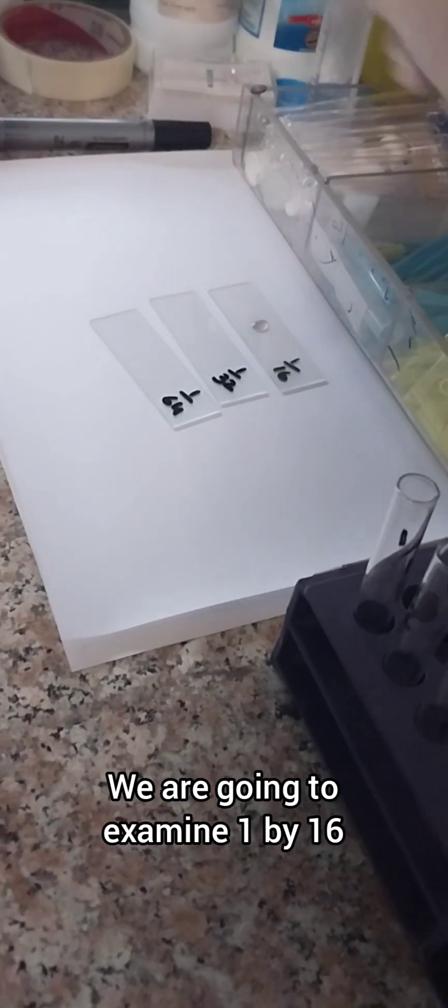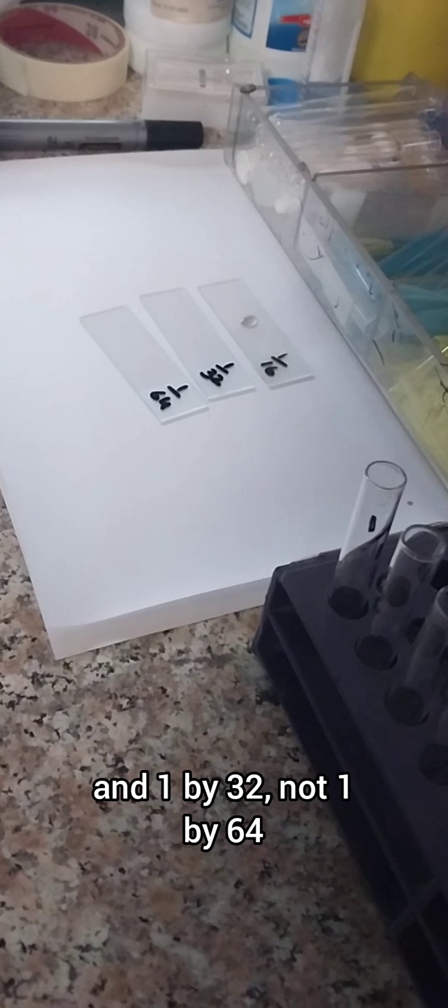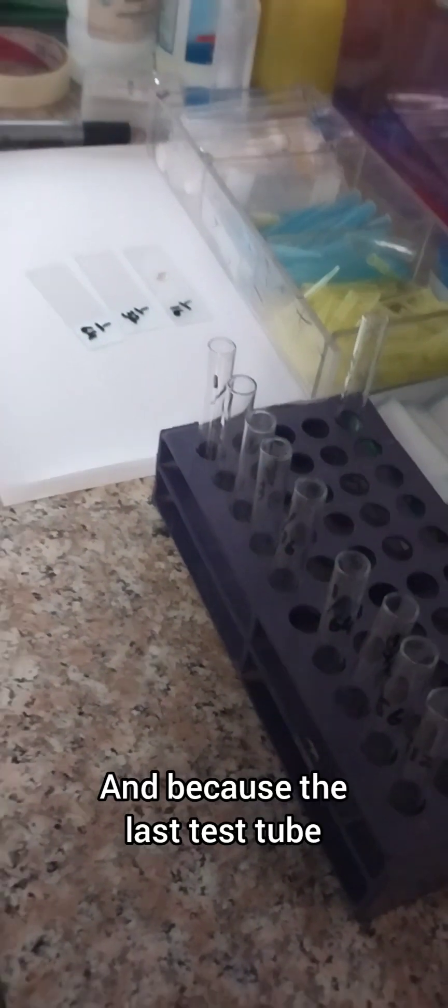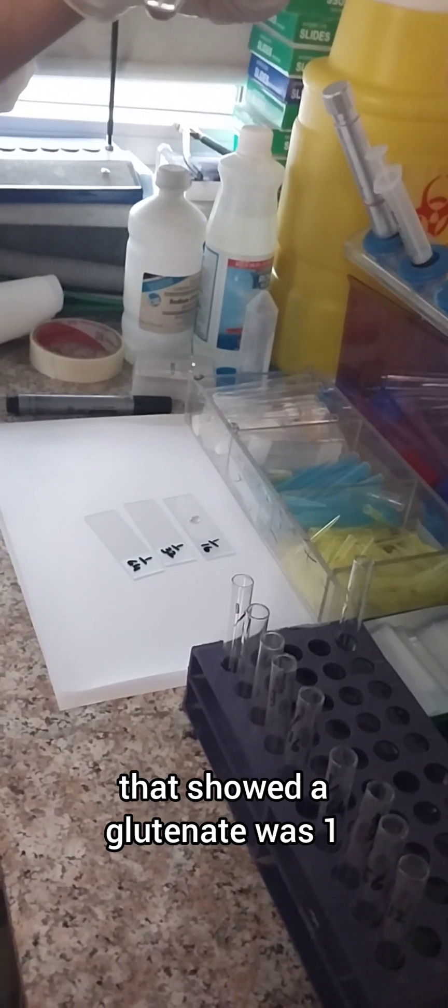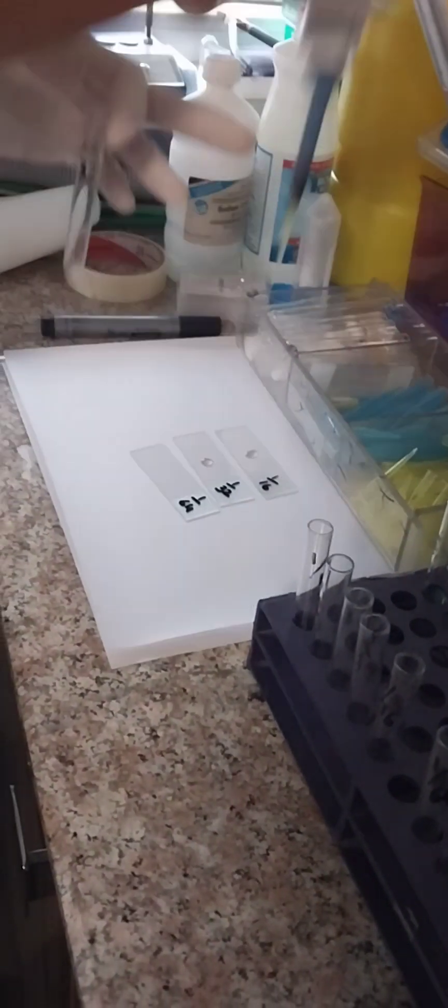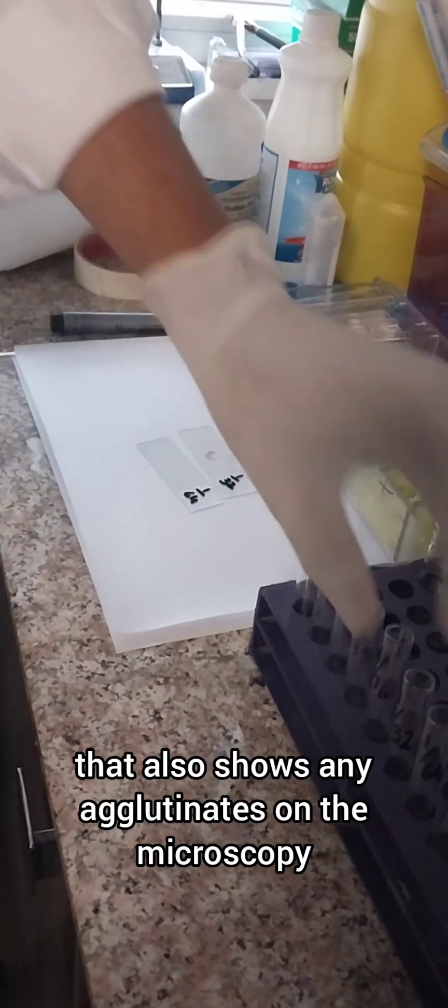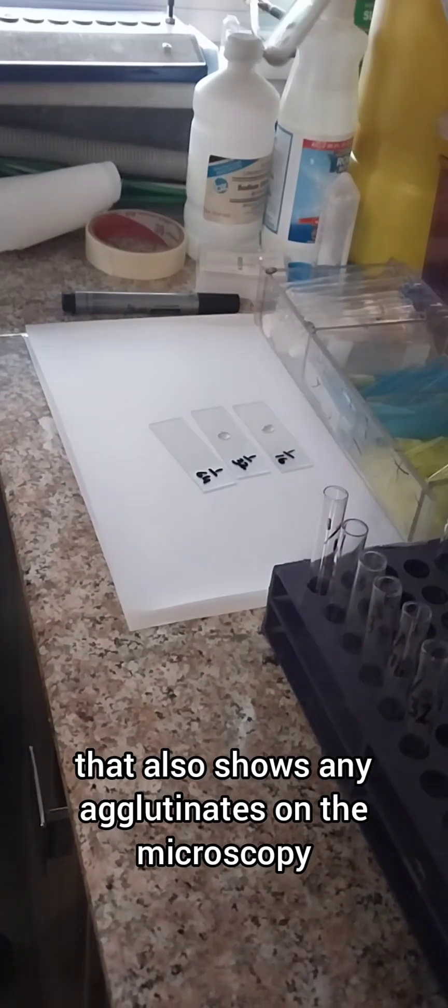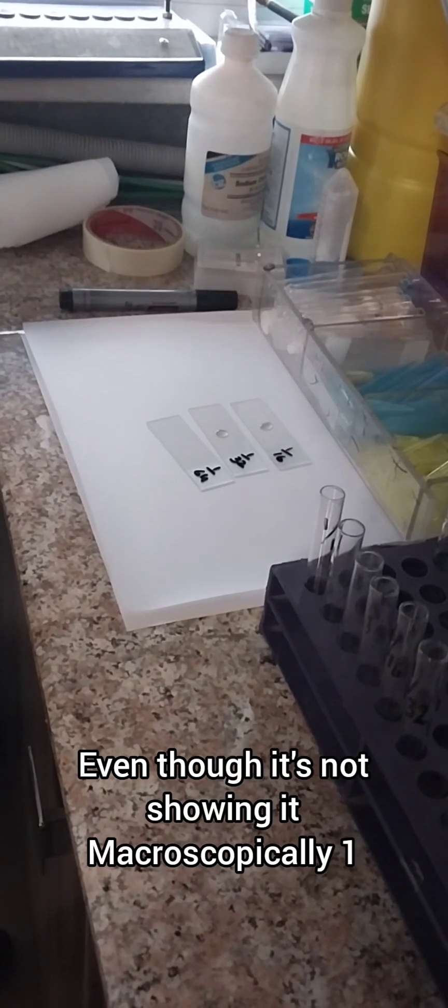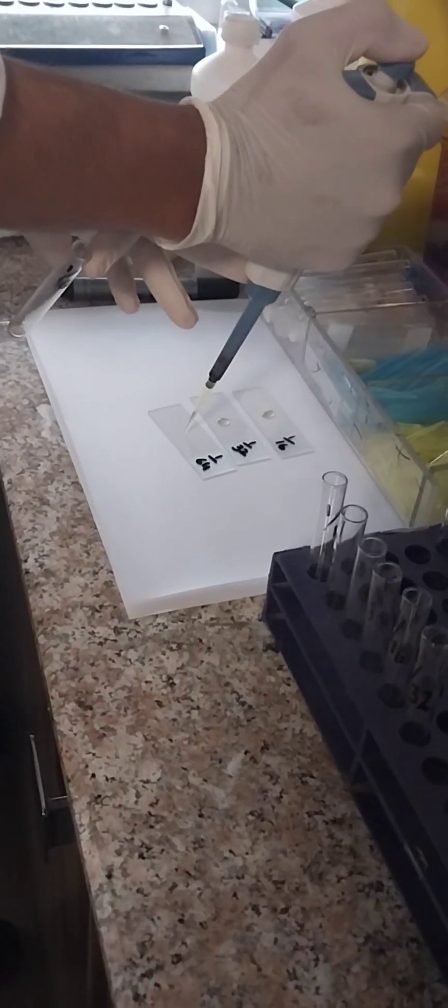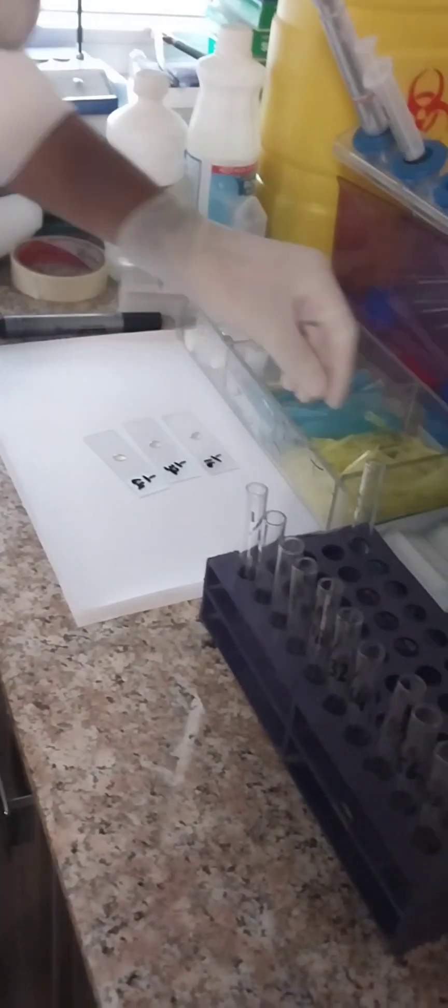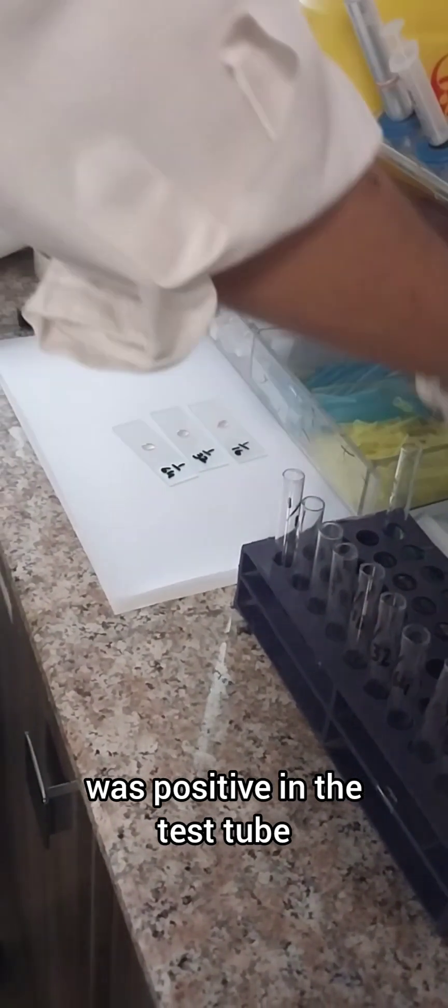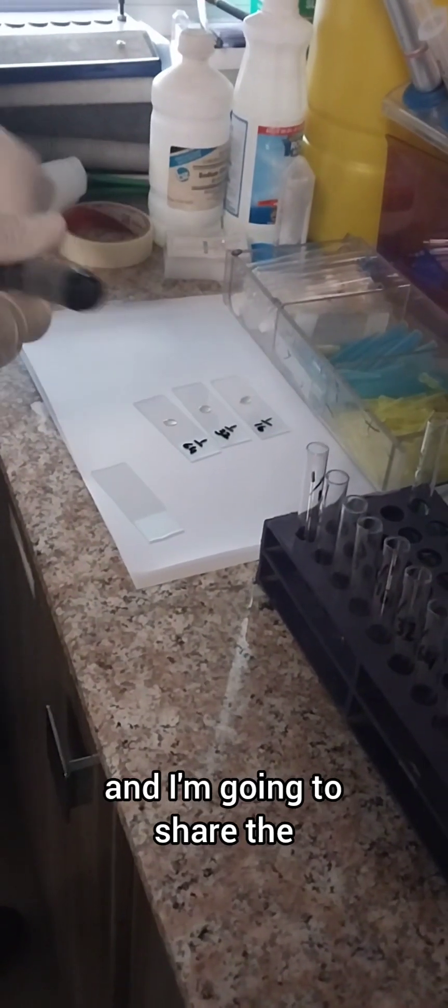The last step in RH antibody will be making the slide. We are going to examine 1:16 and 1:32, not 1:64, because the last test tube that showed agglutinates was 1:8. So I'm just going to see 1:16 and see whether that also shows any agglutinates on the microscopy, even though it's not showing it macroscopically. Only 1:8 was positive in the test tube. Now I'm going to see the slide and share the microscopic view with you.